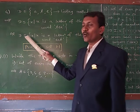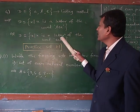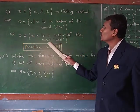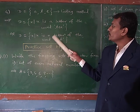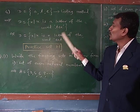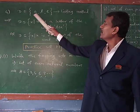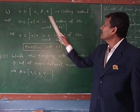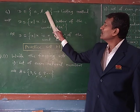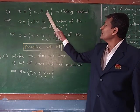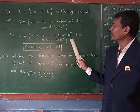It can also be written as: D is the set of all x such that x is the letter of the word EAT. The meaning of THE and EAT is different, but they contain the same alphabets: A, T, E. The meaning of the words is different, but the alphabets are the same.